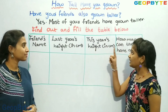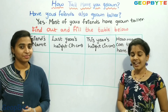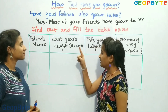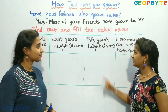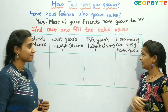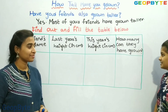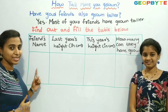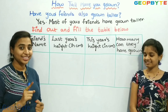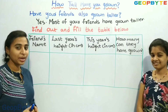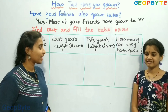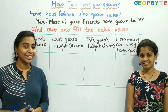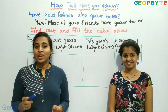Find out and fill the table below. Children, we have a table here. In this table, we have: Friends' name, last year's height in centimetres, this year's height in centimetres, and how many centimetres they have grown. This is an activity for you — write your friends' names, their last year's height, this year's height, and how much they have grown.